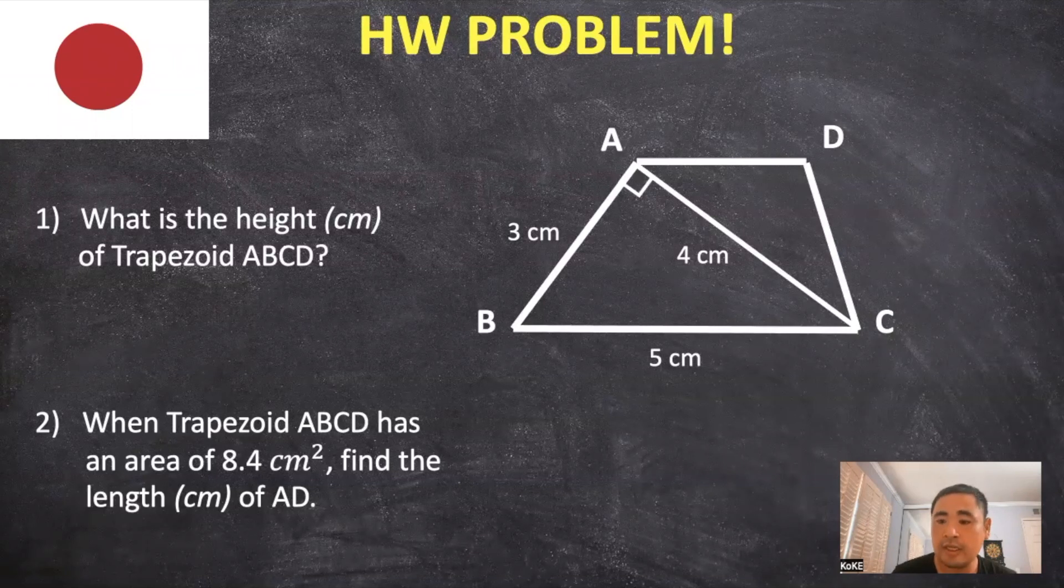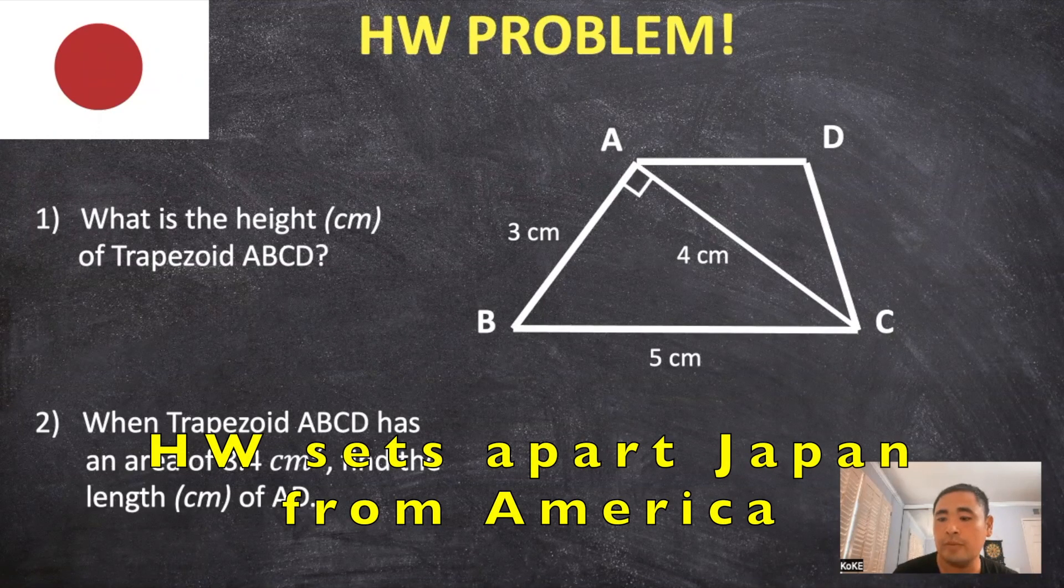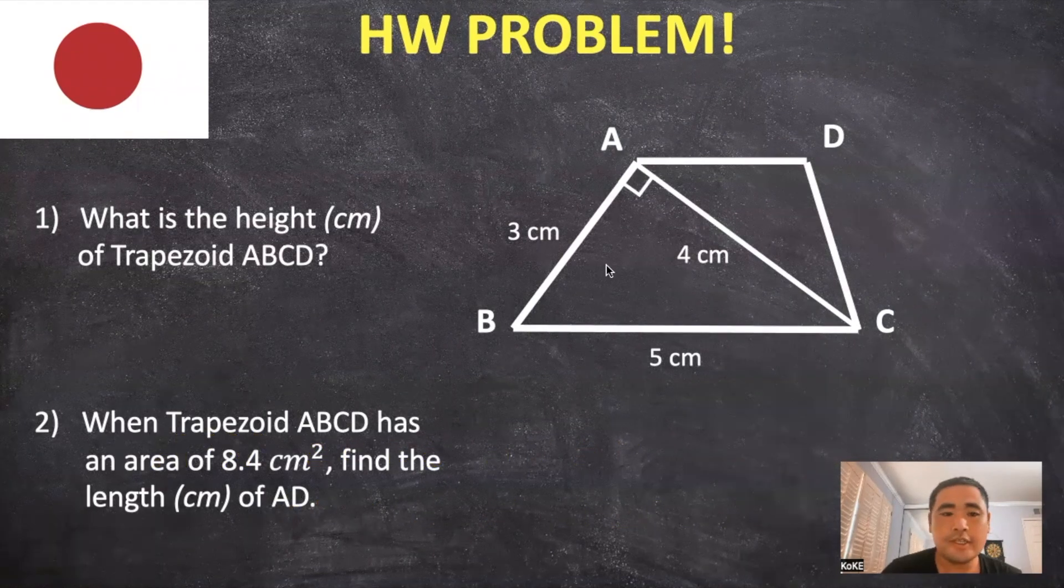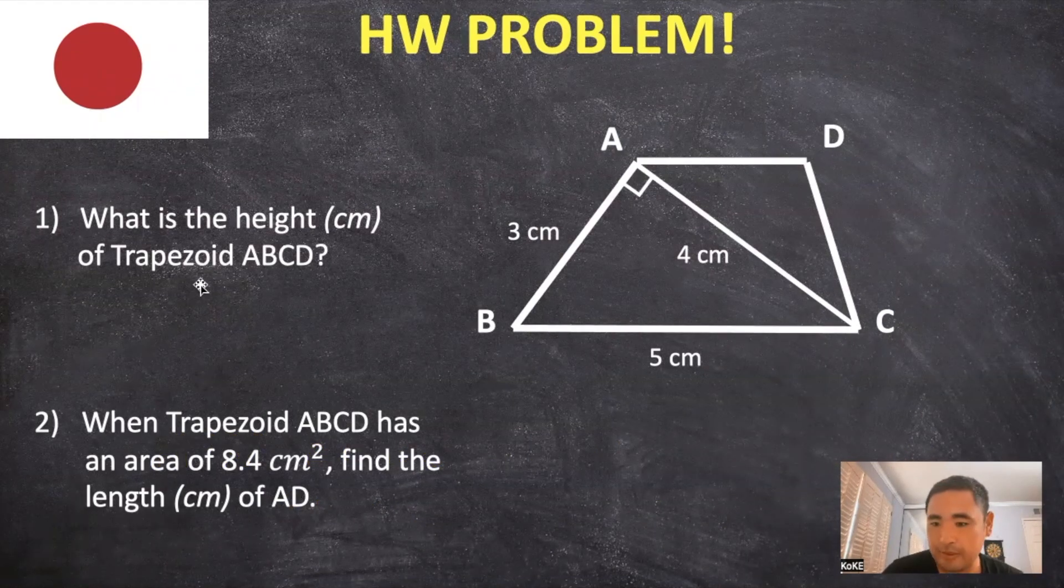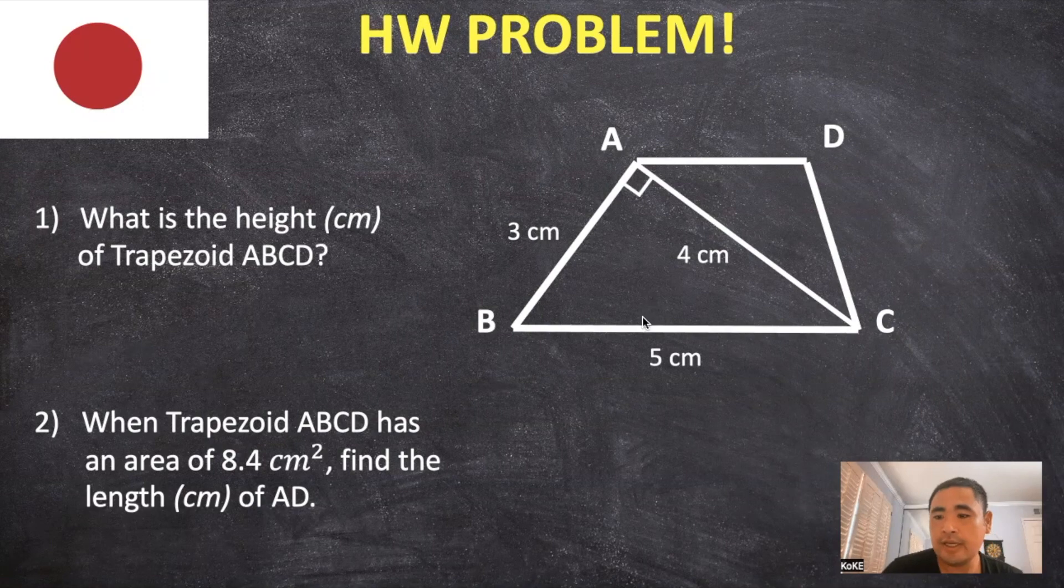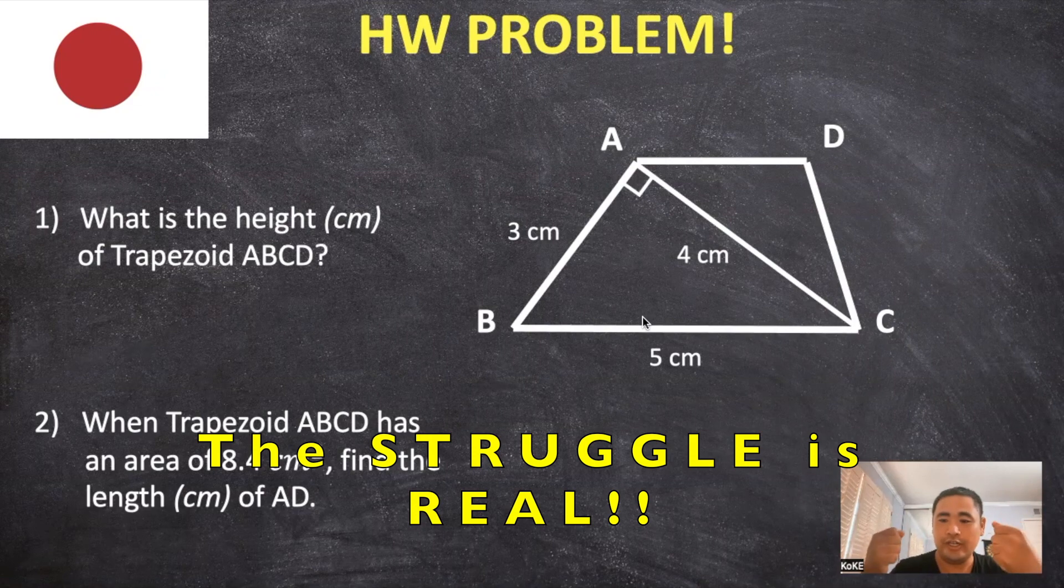And finally, the homework problems are really what sets apart Japan from America. So it says, what is the height of trapezoid ABCD? So it doesn't necessarily ask for the area in a straightforward way to find a solution. But instead, it takes you on this struggle and this journey to link concepts together.